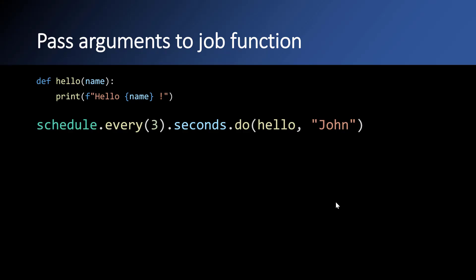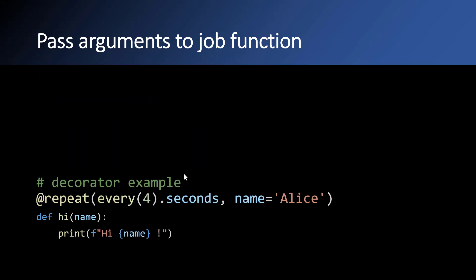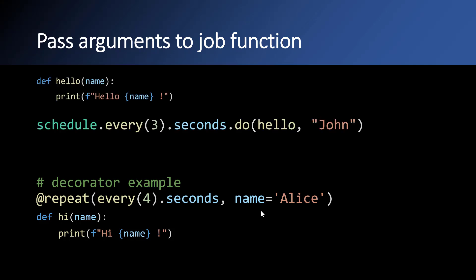The next thing is how to pass arguments to the job function. If your Python function takes input arguments, you can pass them by providing extra arguments to the do() function. For example, if triggering a hello function every three seconds that takes a name argument, you give name as the next argument to do(). With the repeat decorator, you can also pass arguments — for example, decorating with @repeat(every(4).seconds) and passing name='Alice', so it triggers every four seconds with the input name as Alice.